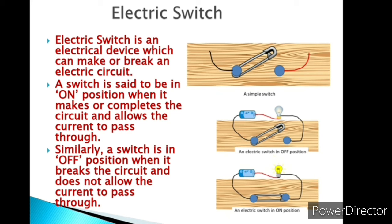We can understand the switch with the help of these diagrams. If you see, this subtipine does not touch this nail. It means no current. This position is called the OFF position and in this position current is not able to flow. That's why this bulb does not glow.